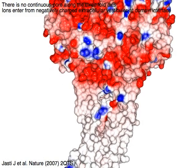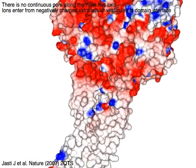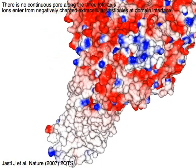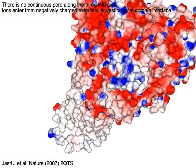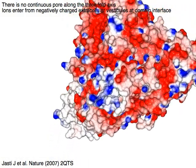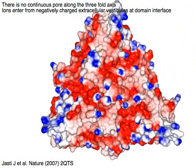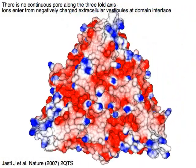There is no continuous pore along the threefold axis. Ions enter from negatively charged extracellular vestibules at the domain interface.